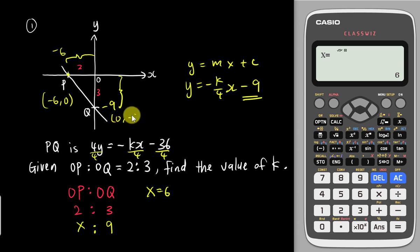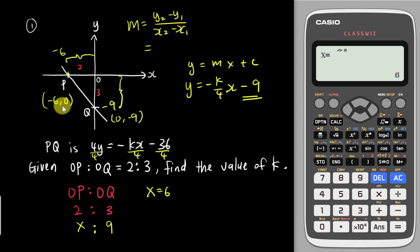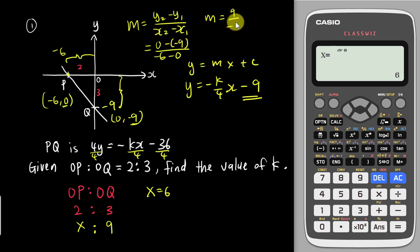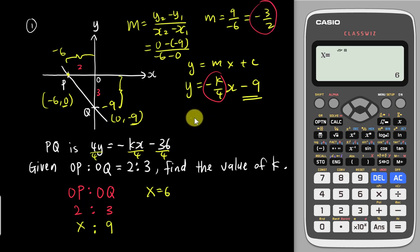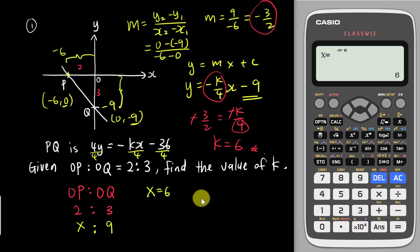Coordinate Q is (0, -9). Now I can find the gradient using the formula (y2 - y1)/(x2 - x1): that is (0 - (-9)) / (-6 - 0) = 9 / -6 = -3/2. Comparing with -k/4: -3/2 = -k/4, cancel the negatives, then multiply by 4 to get k = 12/2 = 6. So k equals 6.